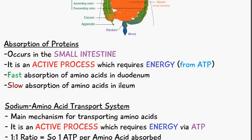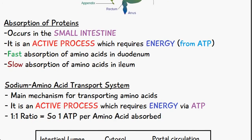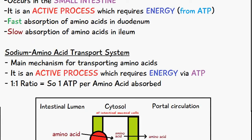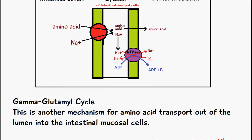Now there are two mechanisms for the absorption of amino acids. We have the sodium amino transport system and we also have the gamma glutamyl cycle.